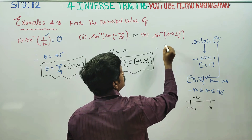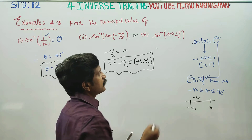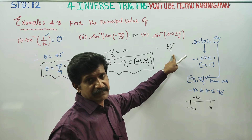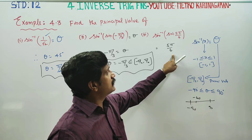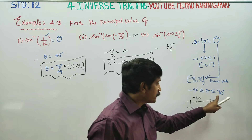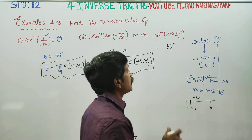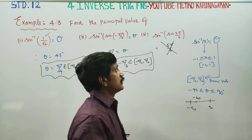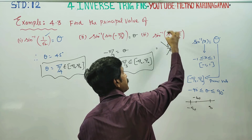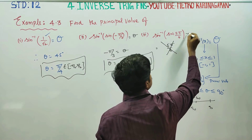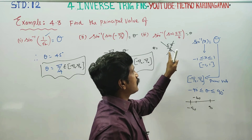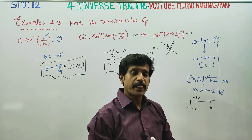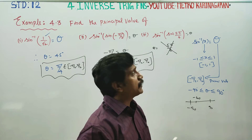Sin inverse, sin cancel — neutralize. We have 5 by 6. Now, 30 into 5 is 150. That is 150 degrees, which is greater than 90. That's why the answer is NOT equal to the principal value — it is not the principal value. Because 150 degrees does not lie in the range [-90°, +90°], it's not a principal value. We need to reduce it.